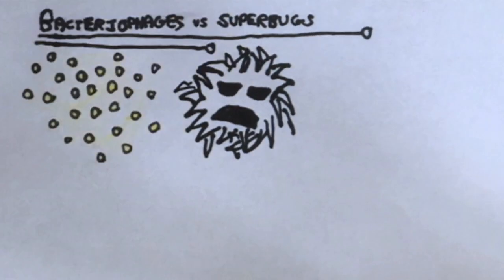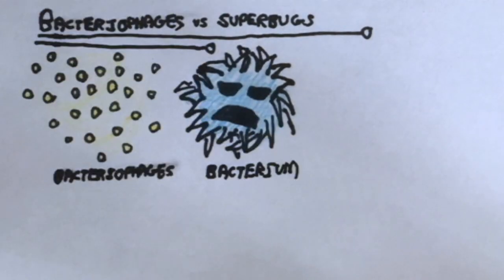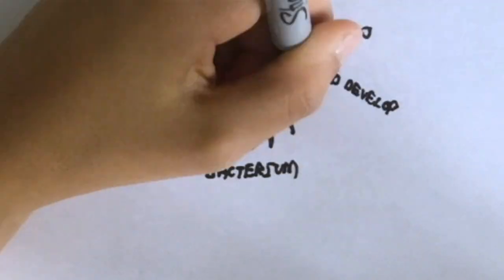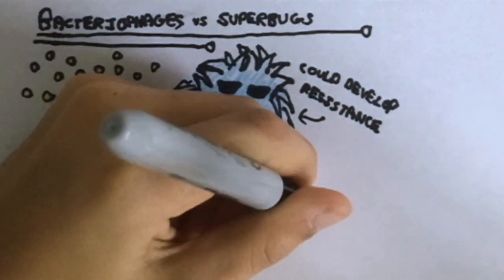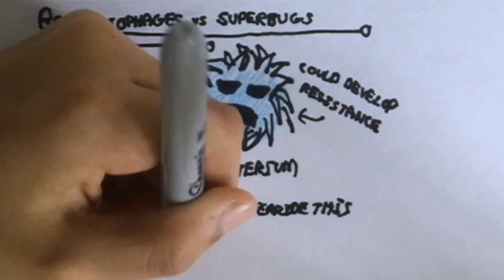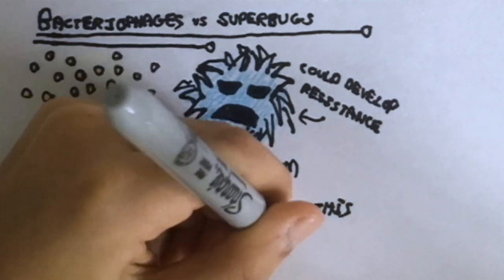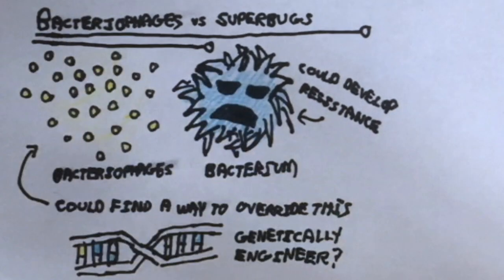They are critical to solving this issue because despite the fact that a bacterium could develop resistance to a bacteriophage, the viruses could also evolve. Therefore, they can adapt in order to kill essentially all bacteria. We can use genetic modification to our advantage, and perhaps we could engineer the perfect bacteriophage, able to wipe out any infection.